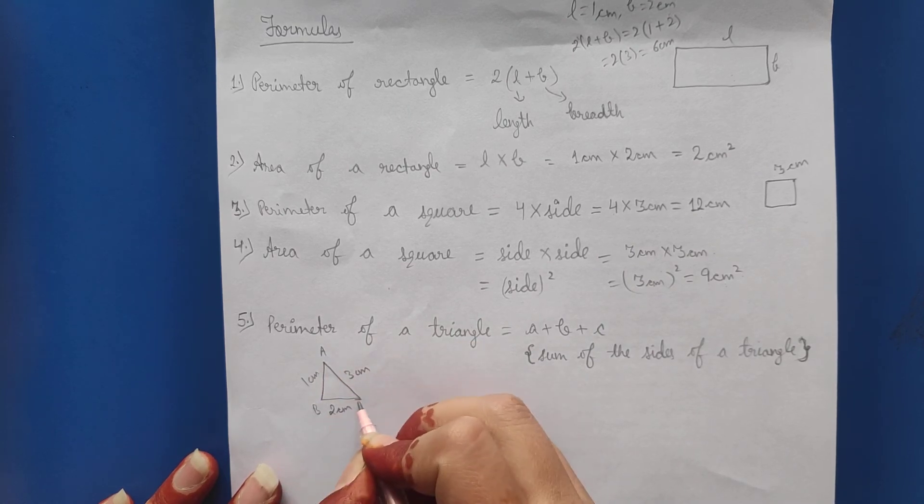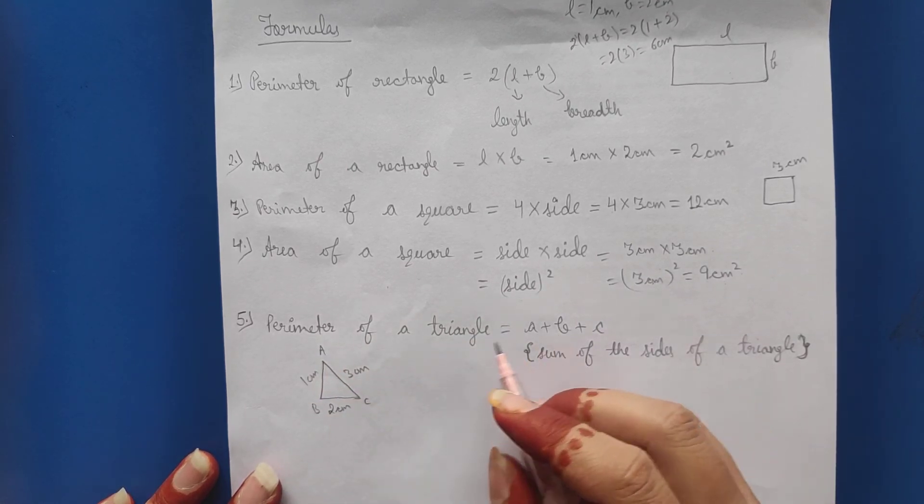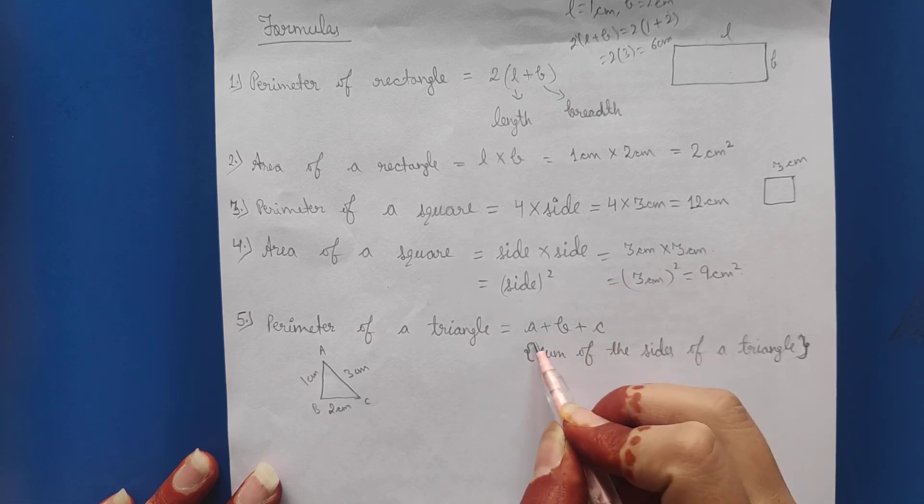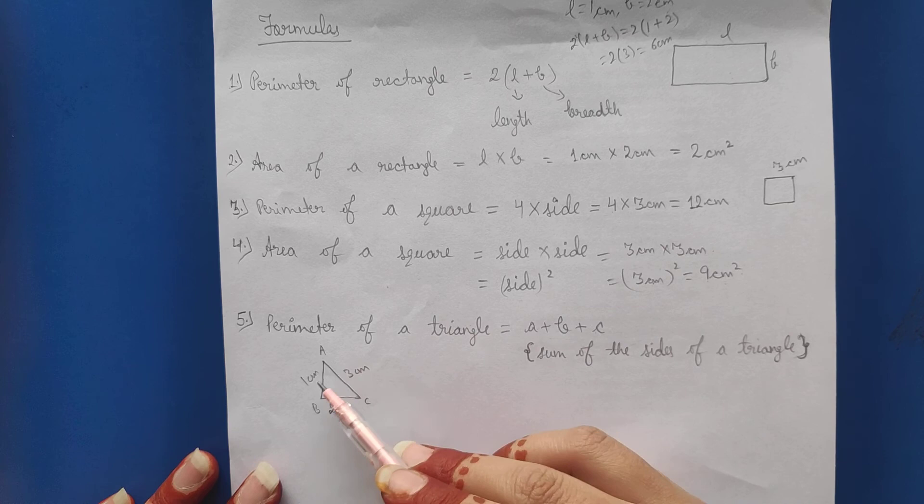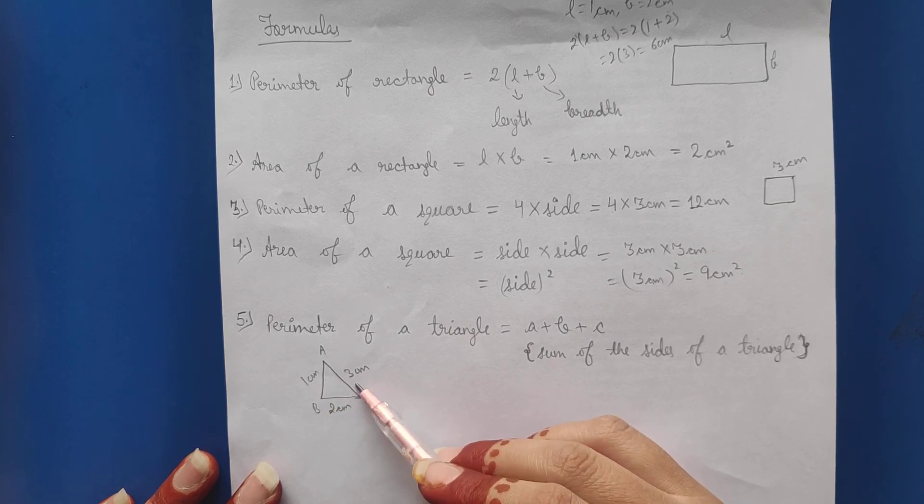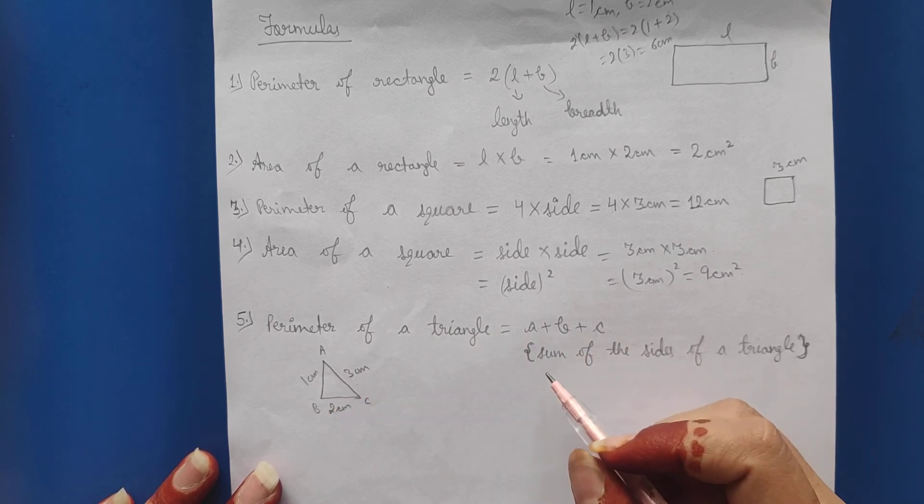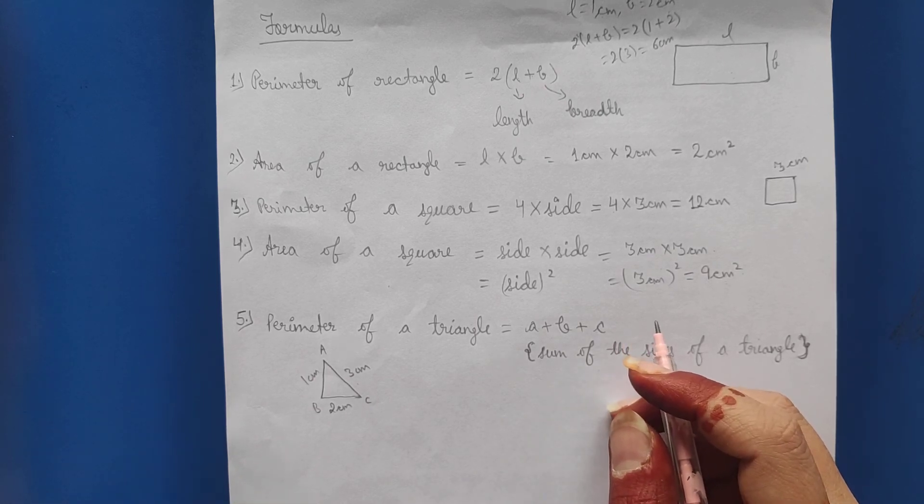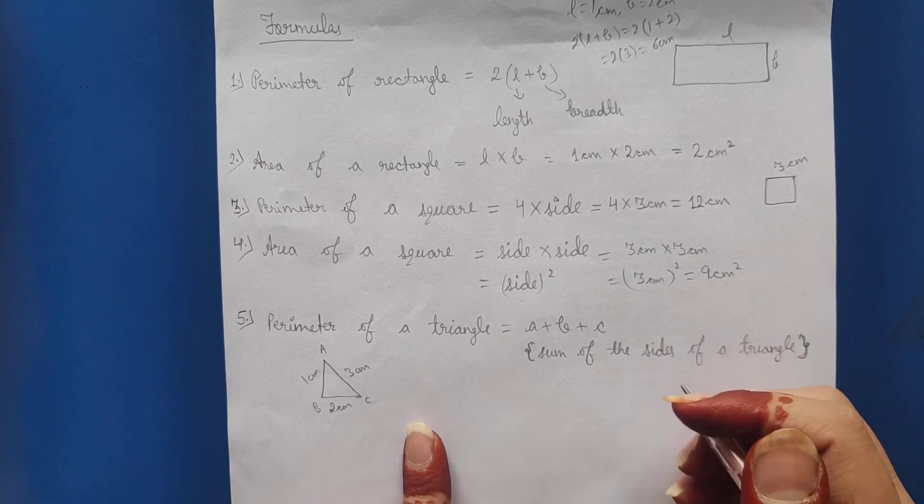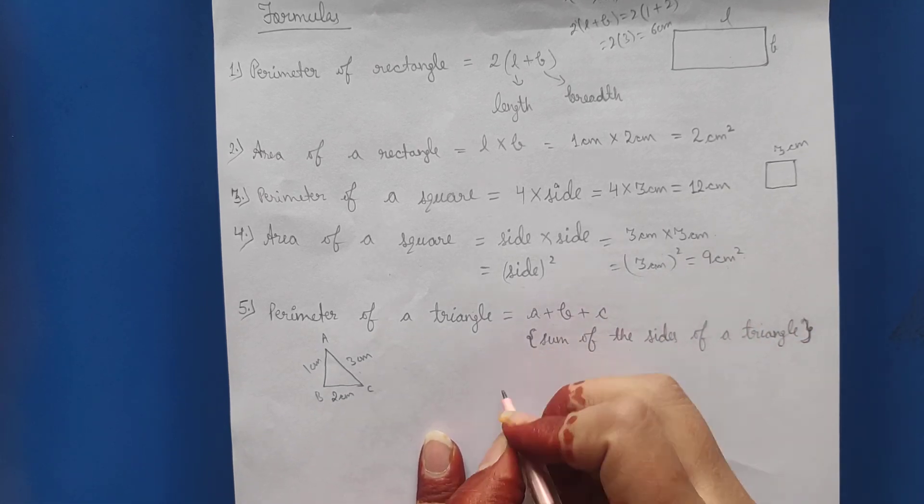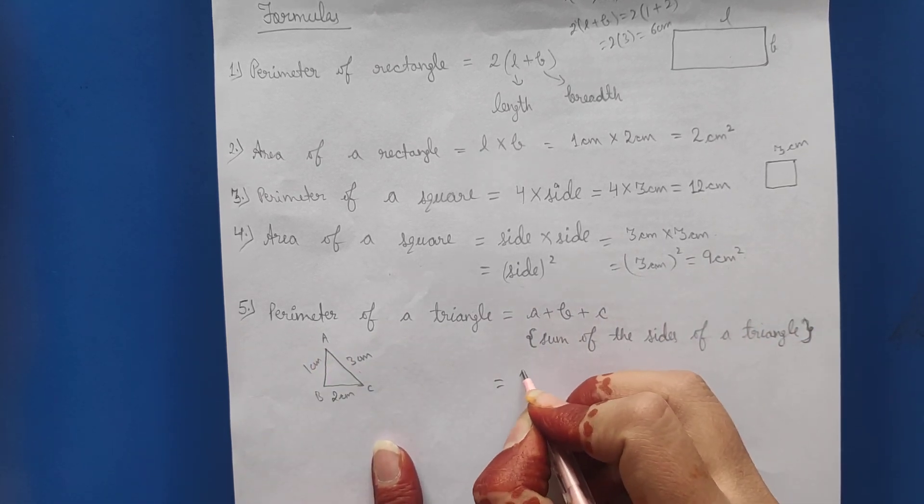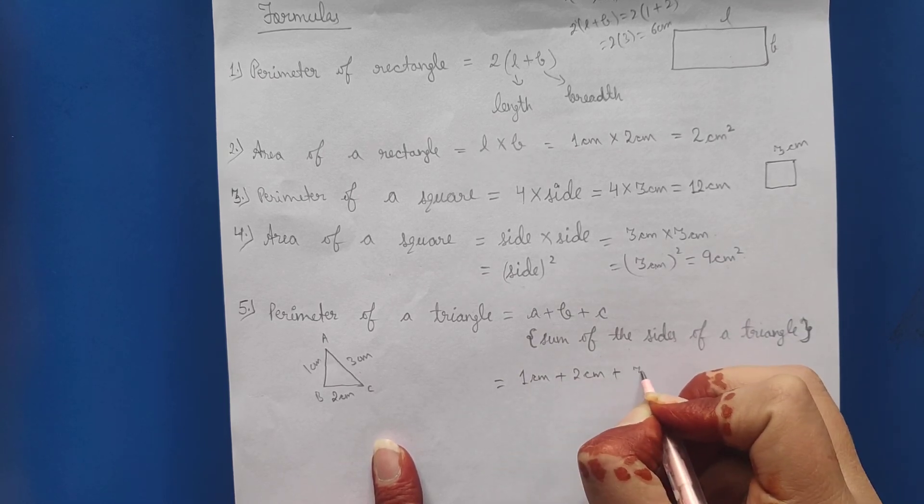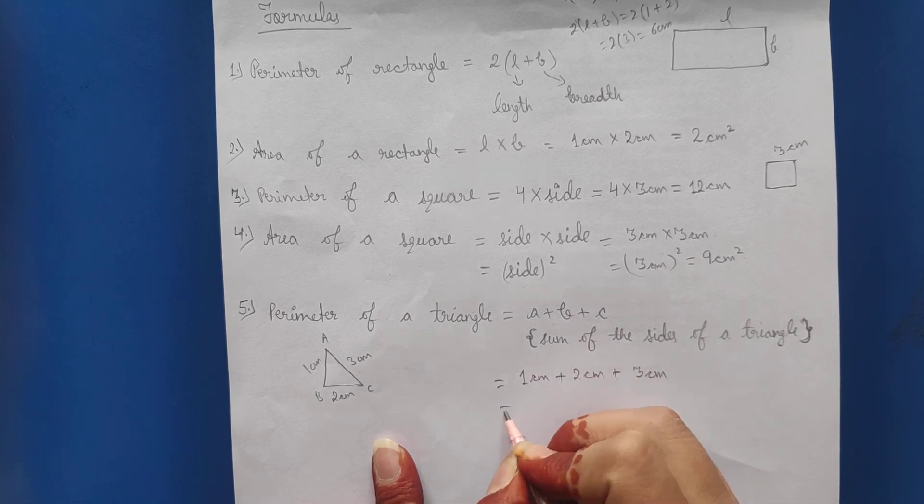Perimeter of a triangle is equal to sum of the sides of the triangle. If you add the sides of the triangle, you will get the perimeter. So here you will do 1 centimeter plus 2 centimeter plus 3 centimeter.